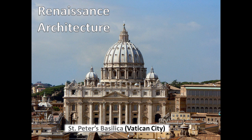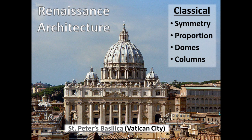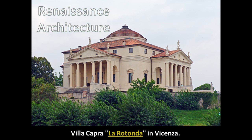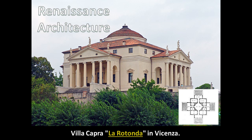Renaissance architecture is exemplified by St. Peter's Basilica in Rome. You can see the balance: columns, a dome on each side, statues, and a large dome in the center. If you look from the center, one side of the building mirrors the other exactly — imitating Greco-Roman architecture through symmetry, proportion, domes, and columns. Here also is a Renaissance villa: all four sides are identical, as shown in the floor plan. This takes the principle of symmetry to the point of obsession.